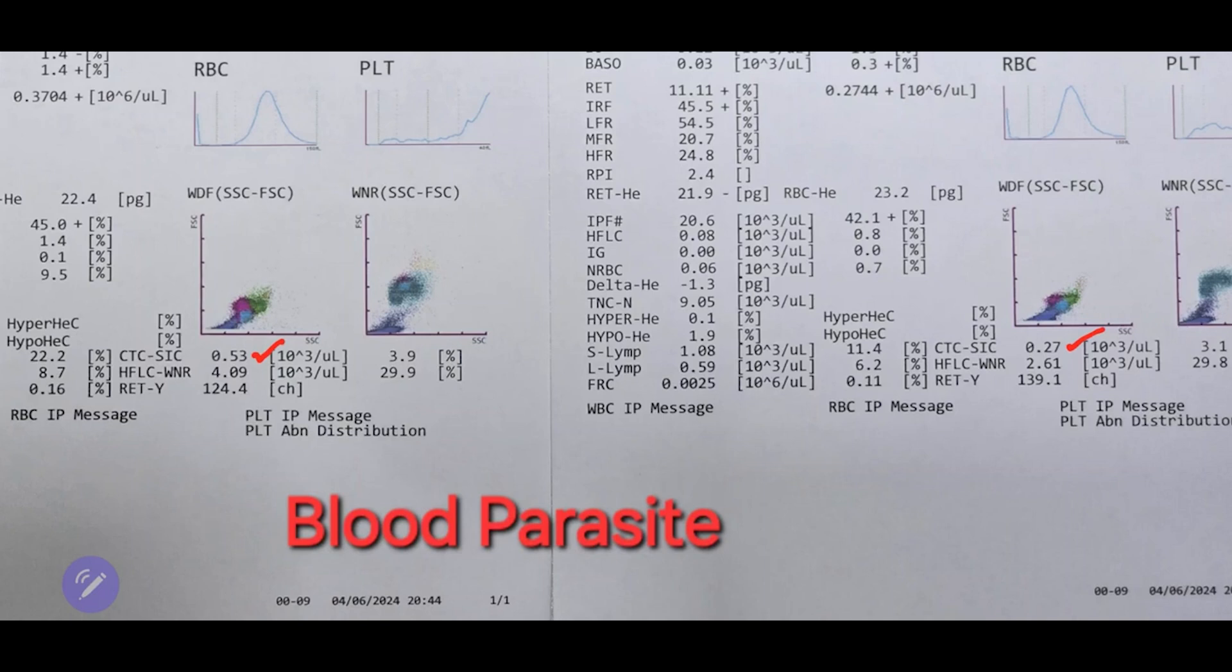Another value we see is labeled as RETY. RETY stands for mean reticulocyte volume. It's not extremely useful, but it's good to be aware of. The RETY value needs to correlate with the RET value. Typically in dogs, RETY is around 150, give or take.